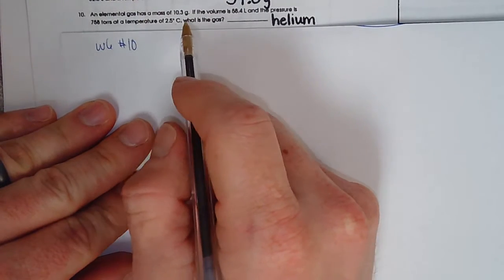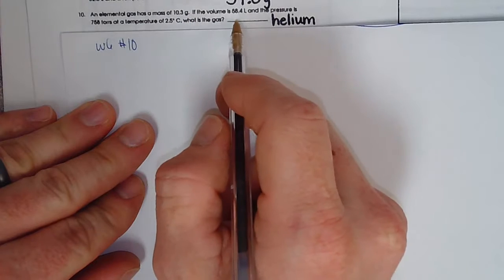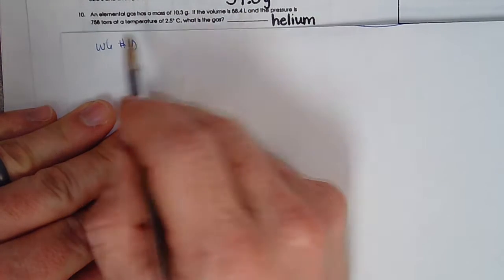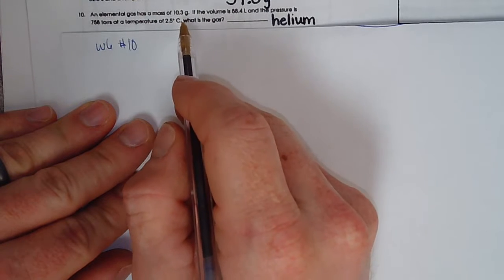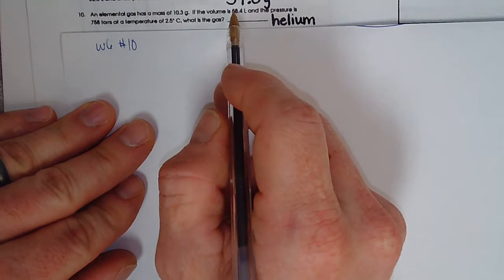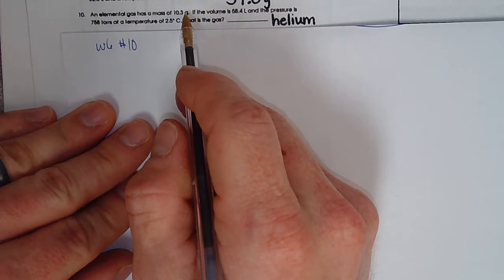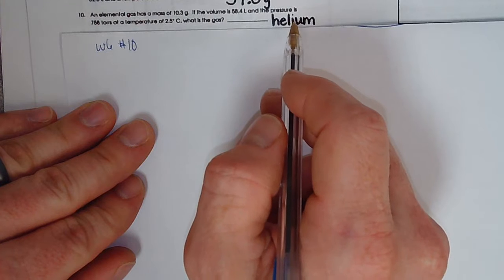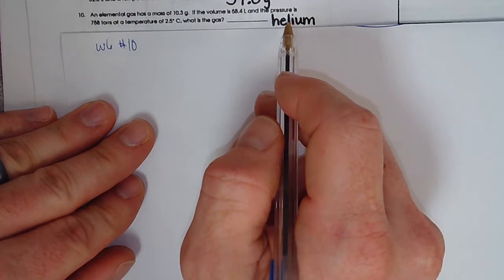So it tells us the information about the gas, tells us the mass of it, and gives us the volume, the pressure, and temperature. So we know if we have volume, pressure, and temperature, we can solve for moles. If we have mass along with that, we can do mass divided by moles to get molar mass. Molar mass would be a pretty decent way to identify an element.